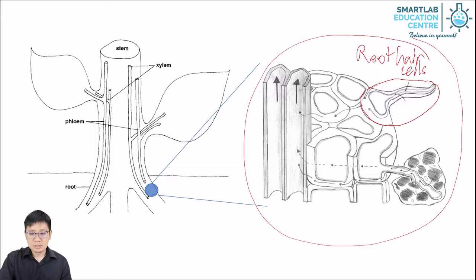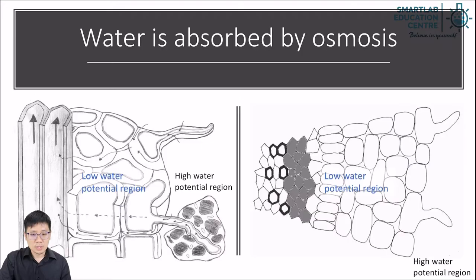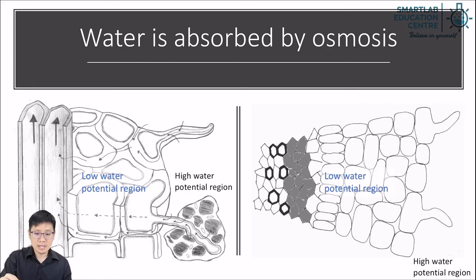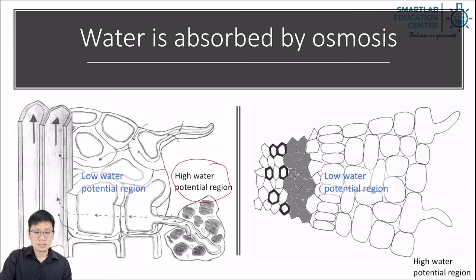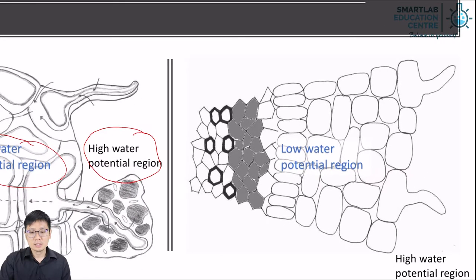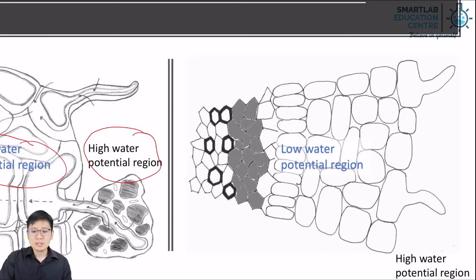So how does the absorption process work? Water is absorbed by osmosis. The water content in the soil is usually much higher than the water content in the root cells. So we have a high water potential region in the soil and a low water potential region inside the root. The diagram on my right side here shows the same thing but from a bird's eye view.